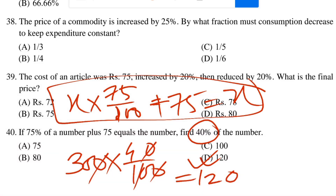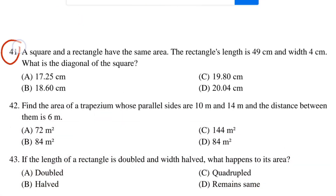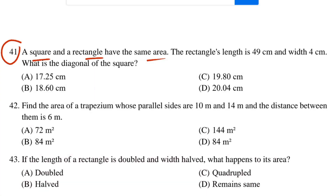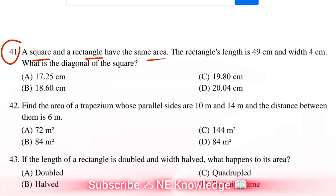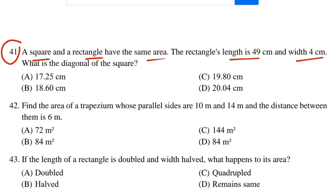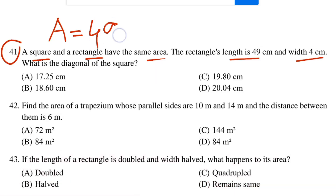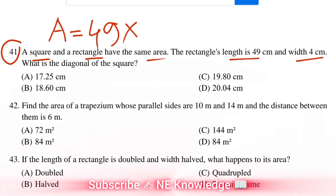The next question is number 41. A square and a rectangle have the same area. The rectangle has length and width. Area is equal to length into width. So it's 49 into width.